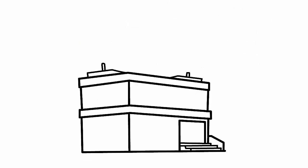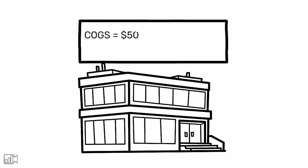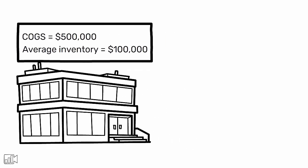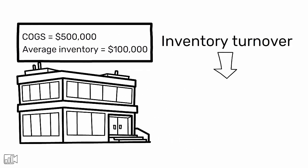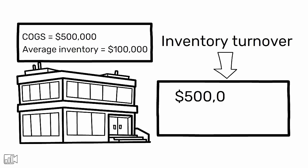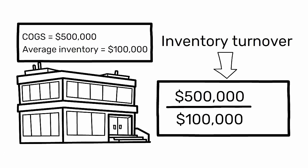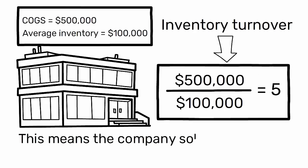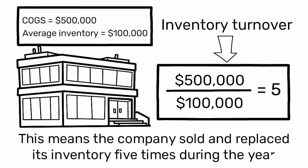For example, suppose a company has a COGS of $500,000 and an average inventory of $100,000 during the year. The inventory turnover is calculated as $500,000 divided by $100,000, which equals five. This means the company sold and replaced its inventory five times during the year.